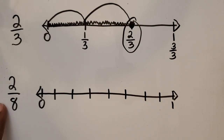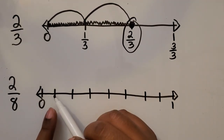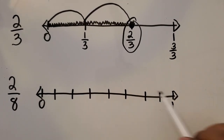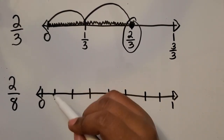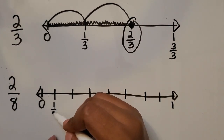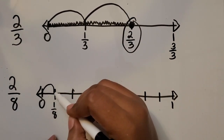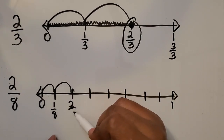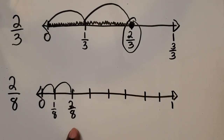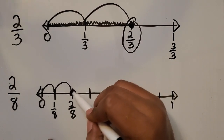So where is two-eighths? If I start at zero, from zero to the next tick mark is one out of eight — let's label it one-eighth. And from that first one, we can do our jumps again — that will be two-eighths. You can label the rest of your number line, or leave it like this to show that you found where two-eighths is on the number line.